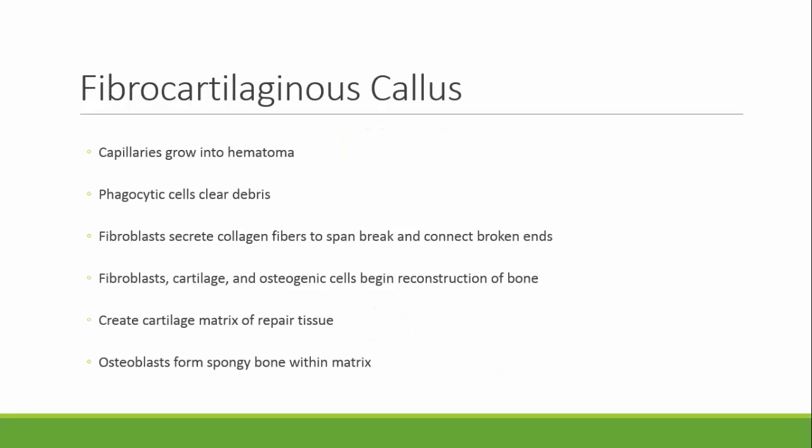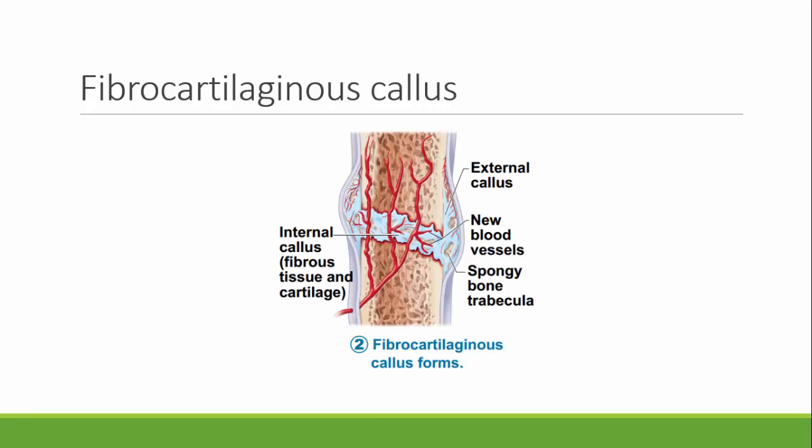The next step is the fibrocartilaginous callus. The capillaries grow into the hematoma as the phagocytic cells clear debris. The fibroblasts secrete collagen fibers to span the break and connect the broken ends. Fibroblasts, cartilage, and osteogenic cells begin their reconstruction of bone, creating a cartilage matrix of repair tissue that includes osteoblasts forming spongy bone. Pictured here, the vessels start to grow across and broken debris is cleared away by the phagocytic cells.